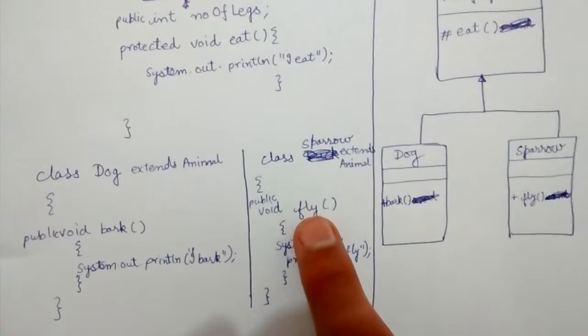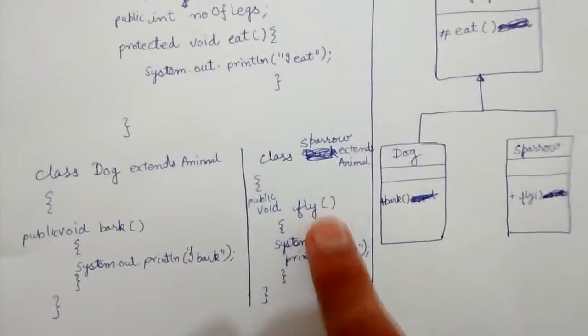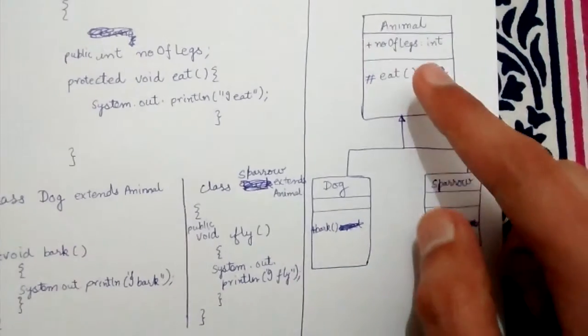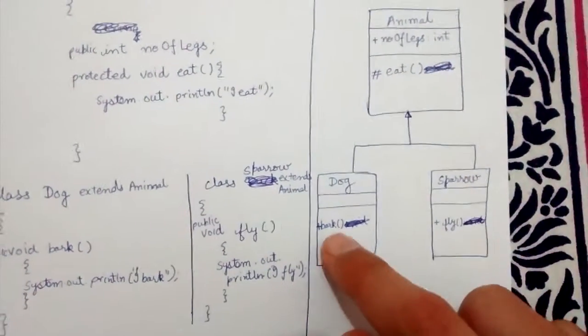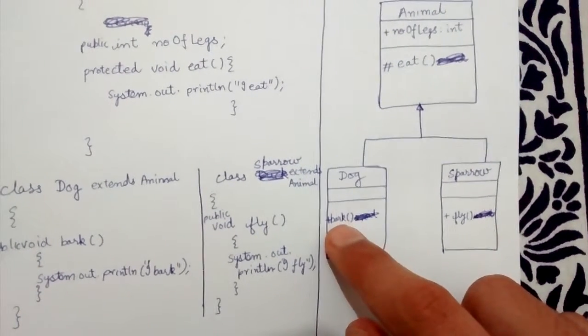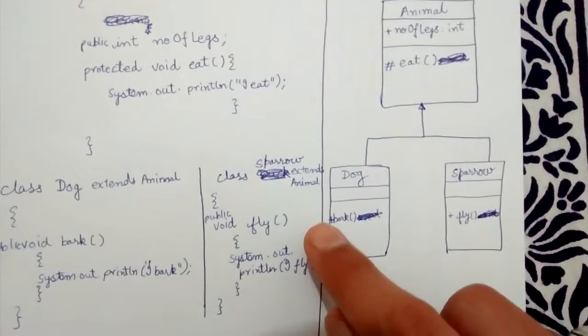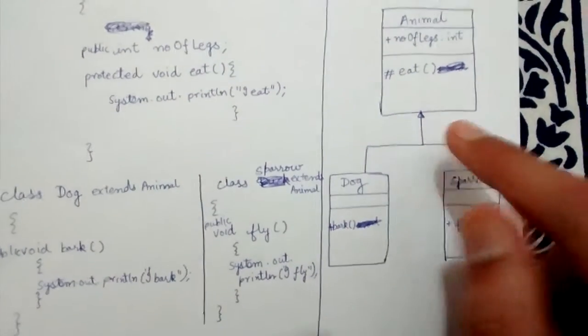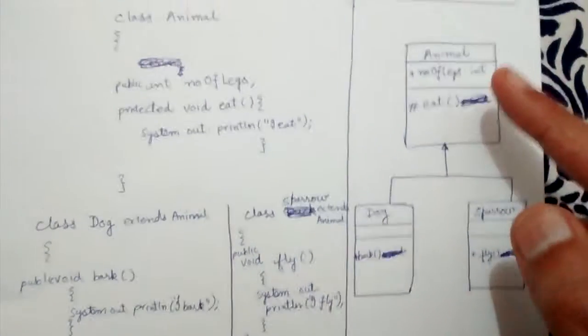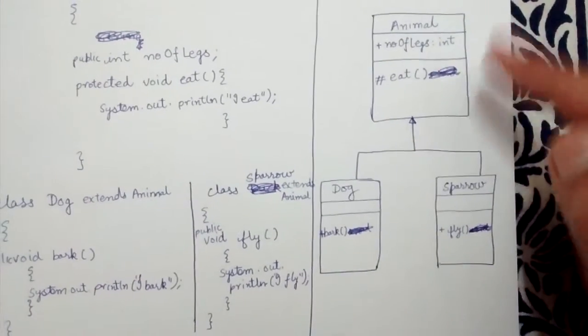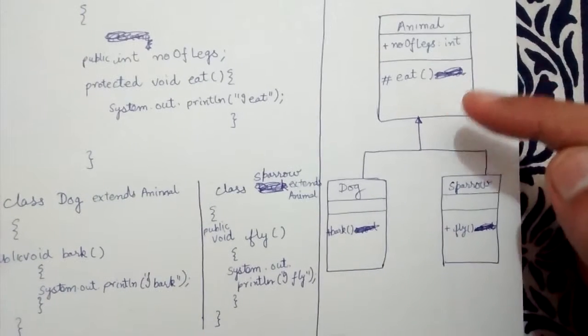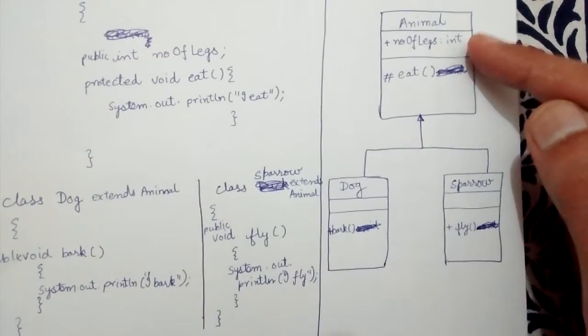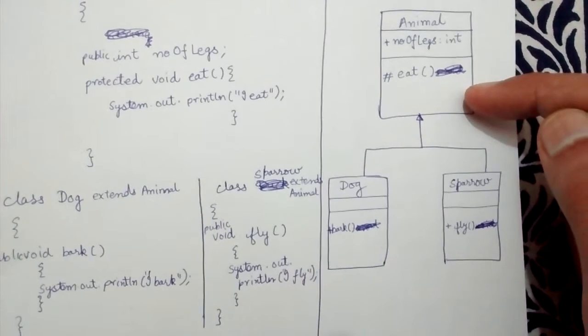When we draw the class diagram, we represent only the additionally added methods along with their visibility (public here). The class is represented by a rectangle with three sections - in each section we write the class name, the variables, and the methods respectively.